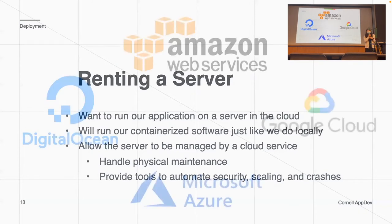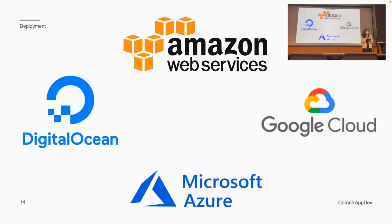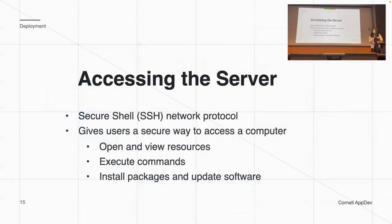There are a couple of different types of cloud services you've probably heard of. AWS is a very big one. DigitalOcean is also very big — it's what we use on AppDev. And there's also Azure and Google Cloud. Does anyone have any questions about deployment? Hopefully everything made sense.